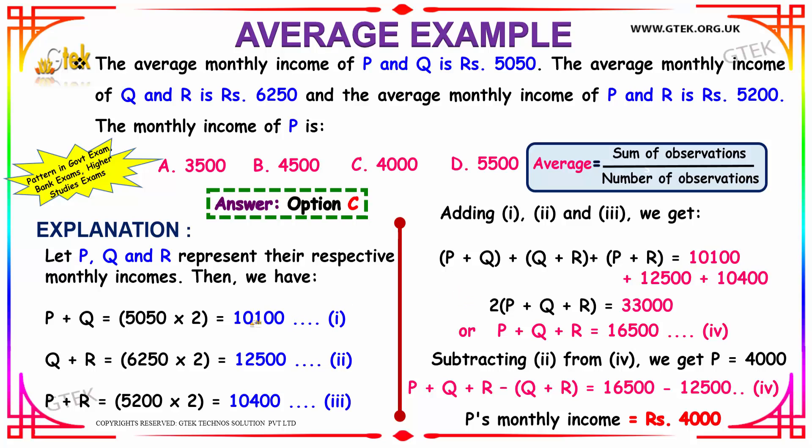Subtracting equation 2 from equation 4, we get P plus Q plus R minus Q plus R. Cancelling out the positive and negative terms, you get the value of P to be 4000.